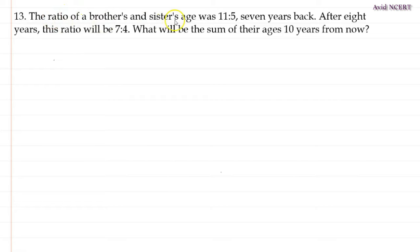The ratio of your brother's and sister's age was 11 is to 5, seven years back. After 8 years, this ratio will be 7 is to 4. So, what will be the sum of their ages 10 years from now?